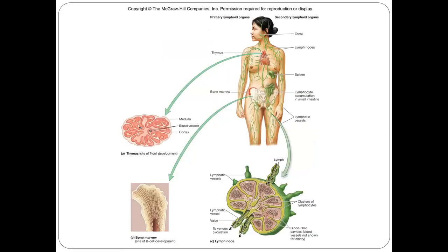In our bodies, there are widely existing organs related to the immune system — the thymus, lymph nodes, and bone marrow. I'm going to skip the detailed structure because we already drew that picture on the YouTube channel — you can watch that there.